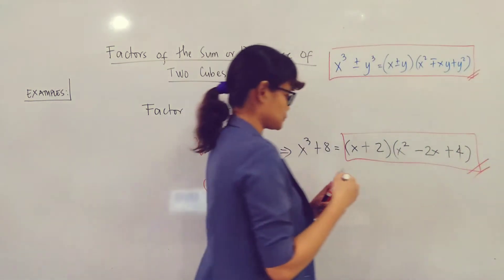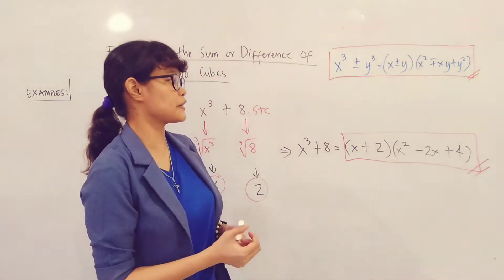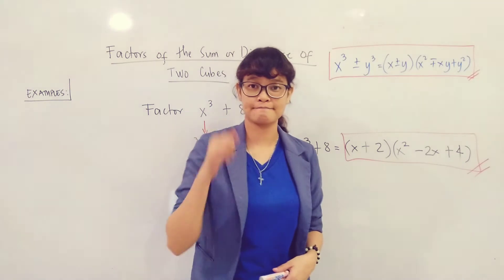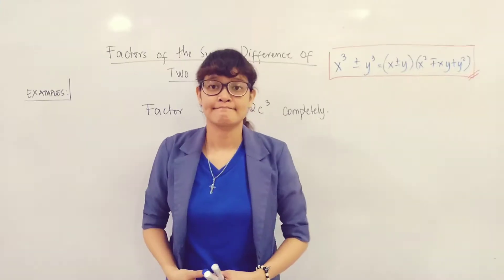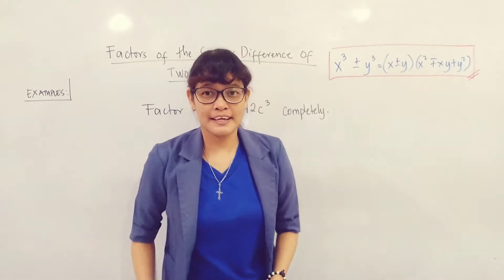So you have x plus 2 times the quantity x squared minus 2x plus 4.